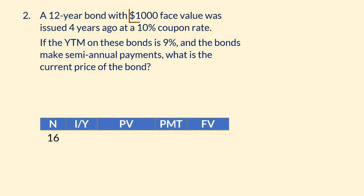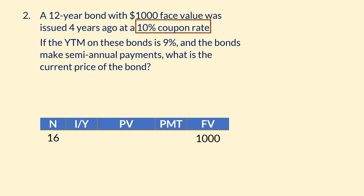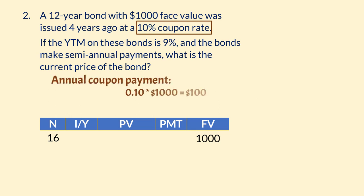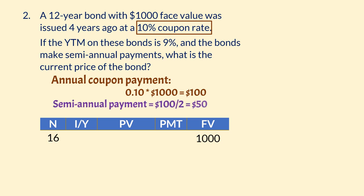The $1,000 face value will be paid at maturity, so it's the future value. The 10% coupon rate means the lender receives 10% of $1,000, or $100, every year. Since the payments are made semi-annually, they will receive two $50 payments every 6 months. So PMT, or payment, equals 50.